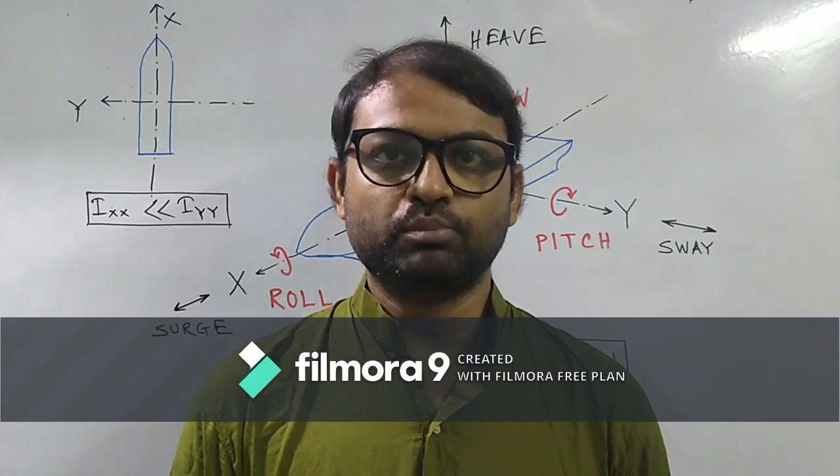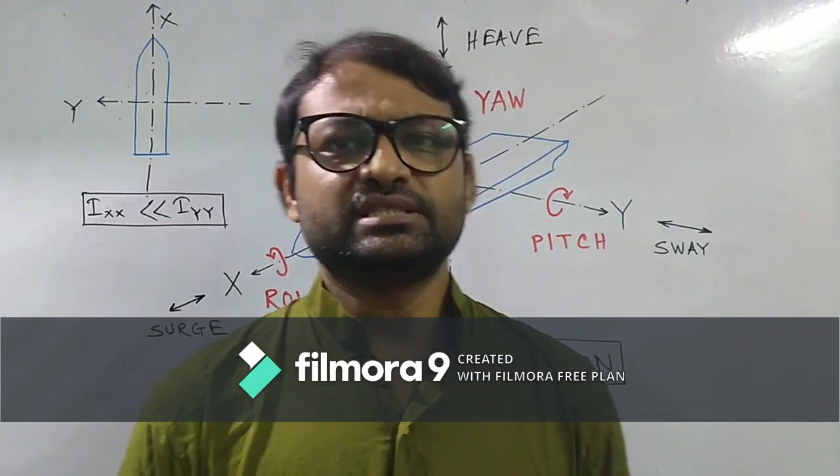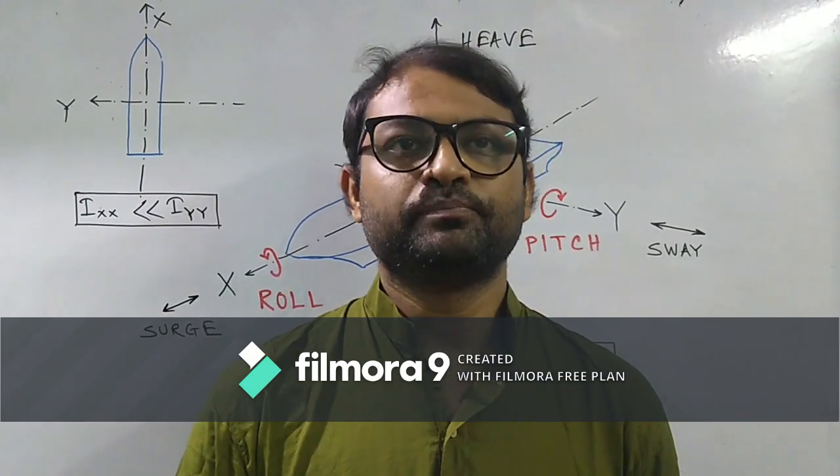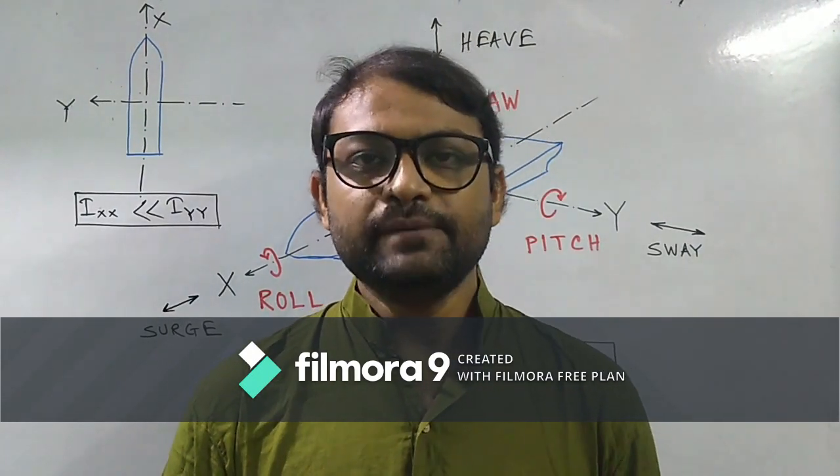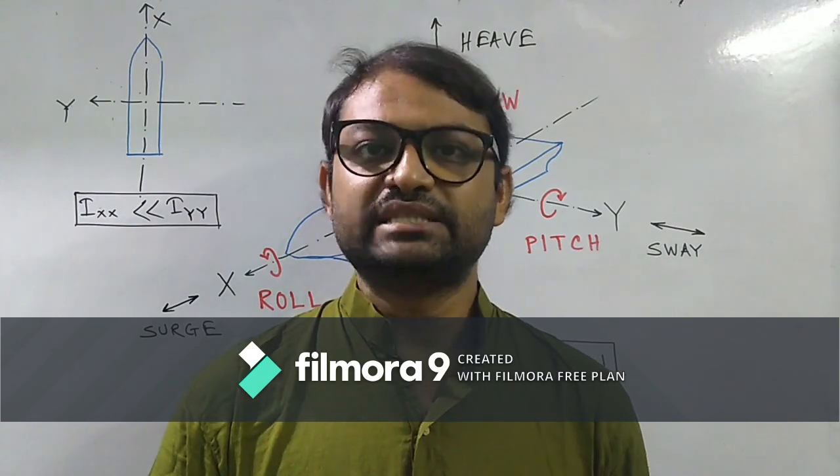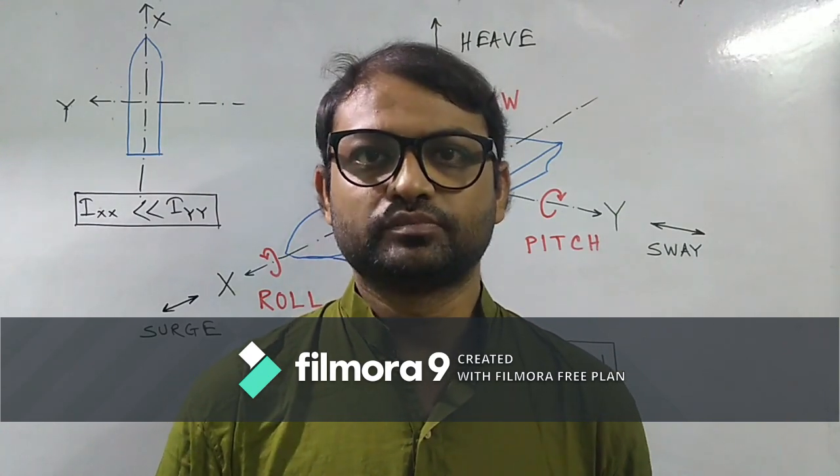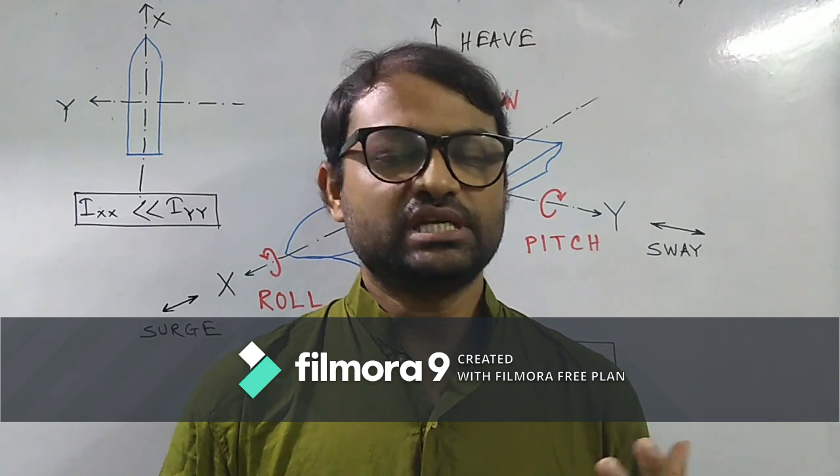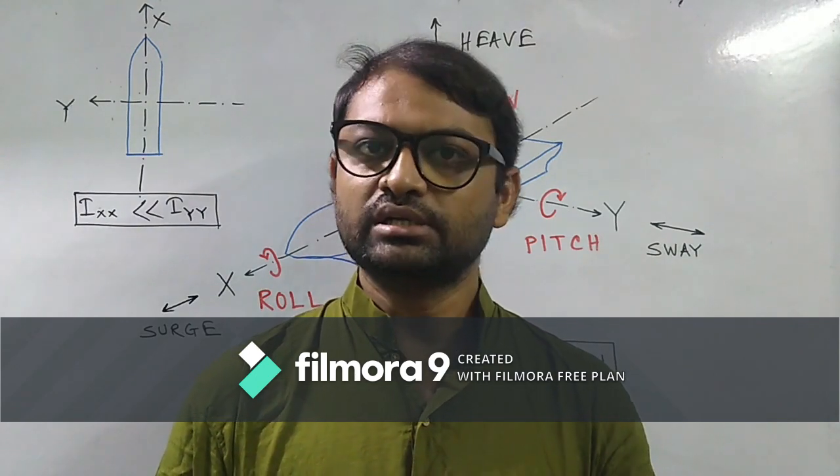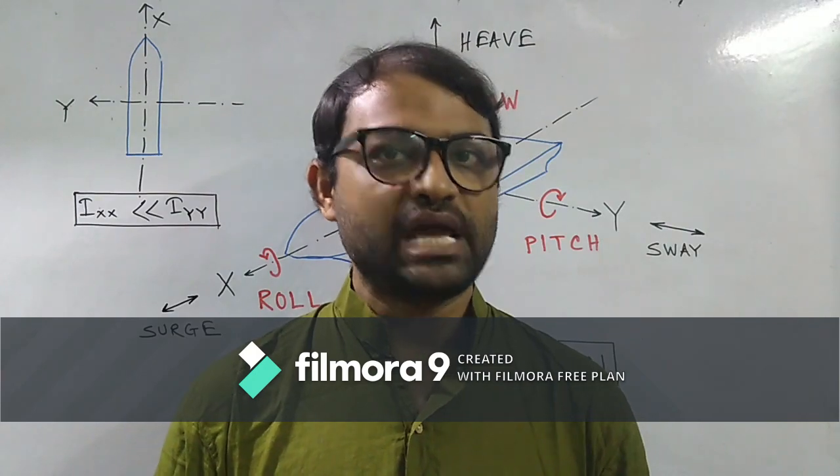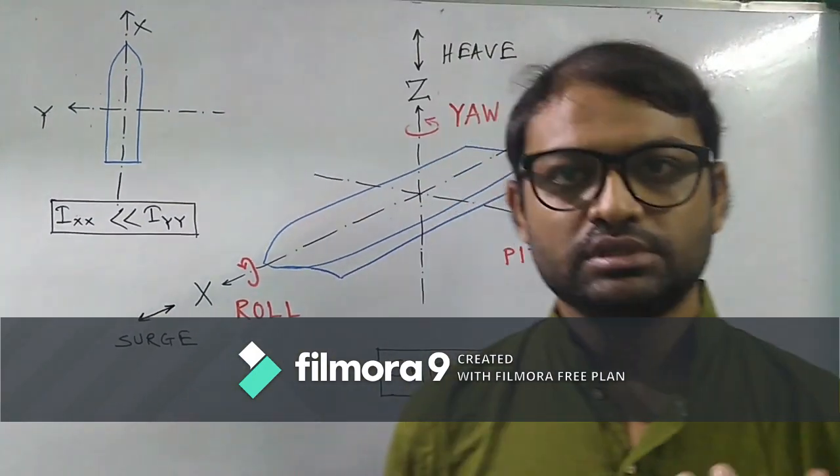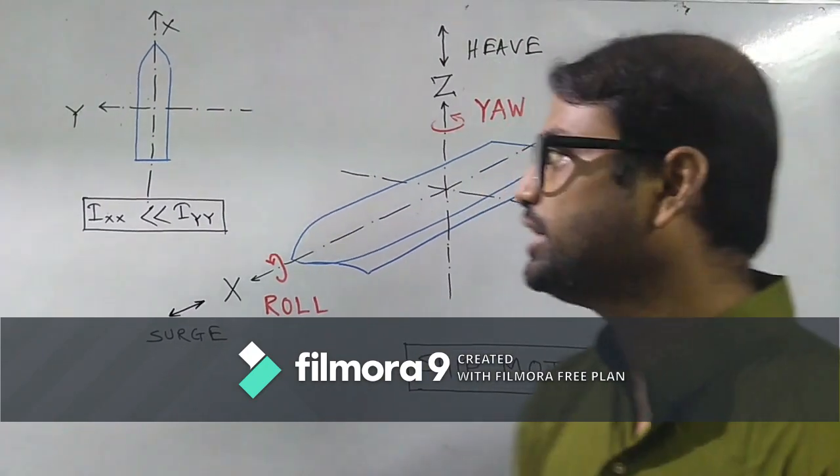So let's start with the ship motions. Ship is a very interesting vehicle or structure where we can see six degrees of freedom all are open. So just first have a look on the different degrees of freedom or different possible types of motions. We have a schematic diagram of a ship.